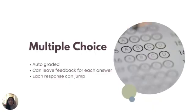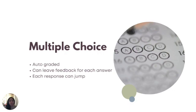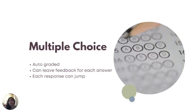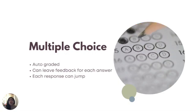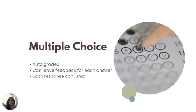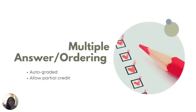First, you have multiple choice questions. These are auto-graded. You can leave feedback for each answer that a student may choose, and you can actually have the video jump back to a previous portion or ahead depending on how a student answers. Then we have the multiple answer ordering. These are also self-graded and they can allow for partial credit if you so choose. They also have feedback options as well.